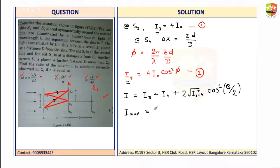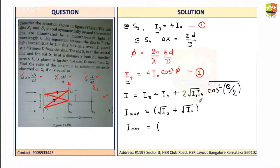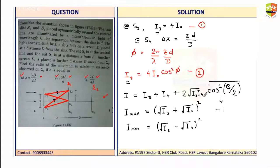Since only maximum and minimum values are asked, I_max occurs when cos²(θ/2) = 1, giving I_max = (√I3 + √I4)². I_min occurs when cos²(θ/2) = -1 at its minimum, giving I_min = (√I3 - √I4)². Substituting the values of z gives the exact intensities. That concludes this question — I hope you learned something. If you have any doubts, feel free to get in touch. Thank you.